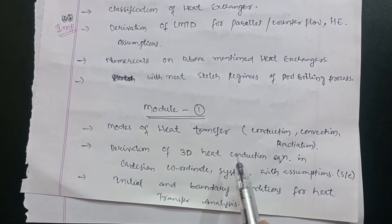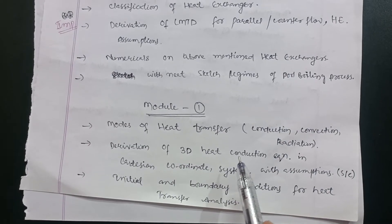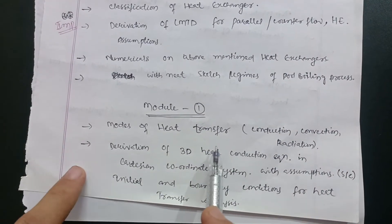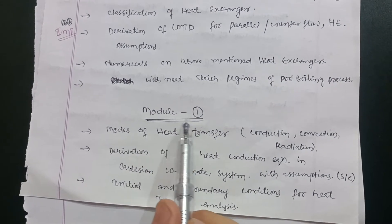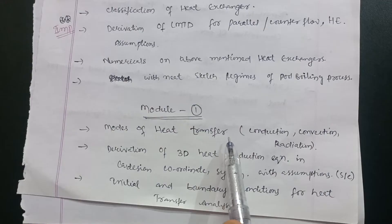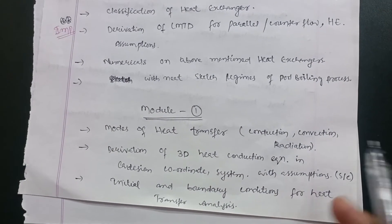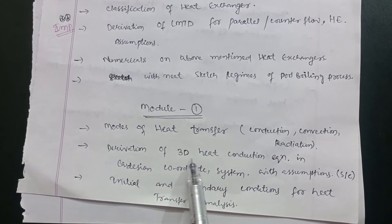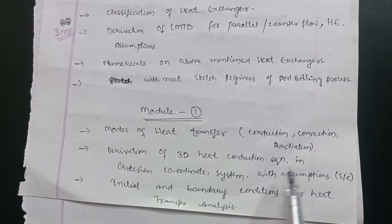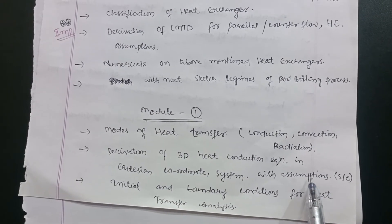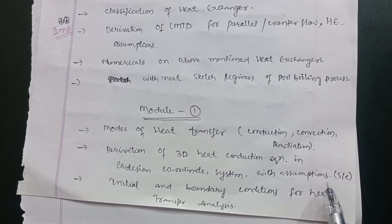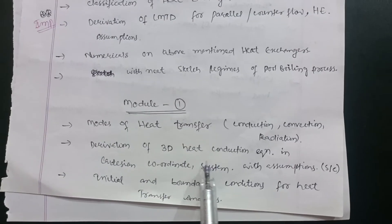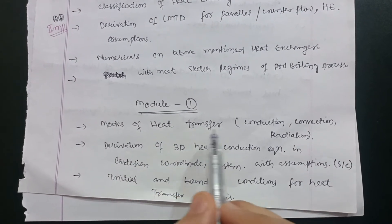Then go for Module 1. There are two parts — whichever is convenient for you. In Part 1, the topics include modes of heat transfer: conduction, convection, and radiation, which you are already aware of. Then there is the derivation of the 3D heat conduction equation in Cartesian coordinates with assumptions. They may also ask it in spherical and cylindrical coordinate systems, so go for that derivation — it is one of the most important questions in this module.